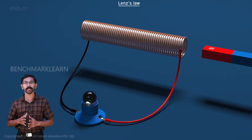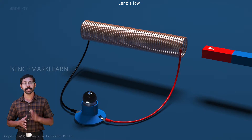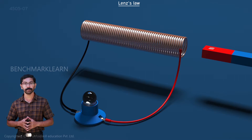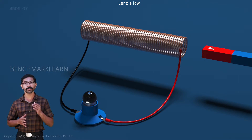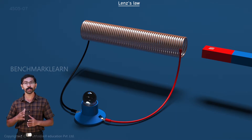The question is: where does the bulb get the energy to light up? It is from the work we do to move the magnet into the coil at a constant velocity. When we move the magnet towards the coil, we experience a repulsive force from the coil that tries to slow us down. So we must do some work to overcome this force and move the magnet towards the coil.